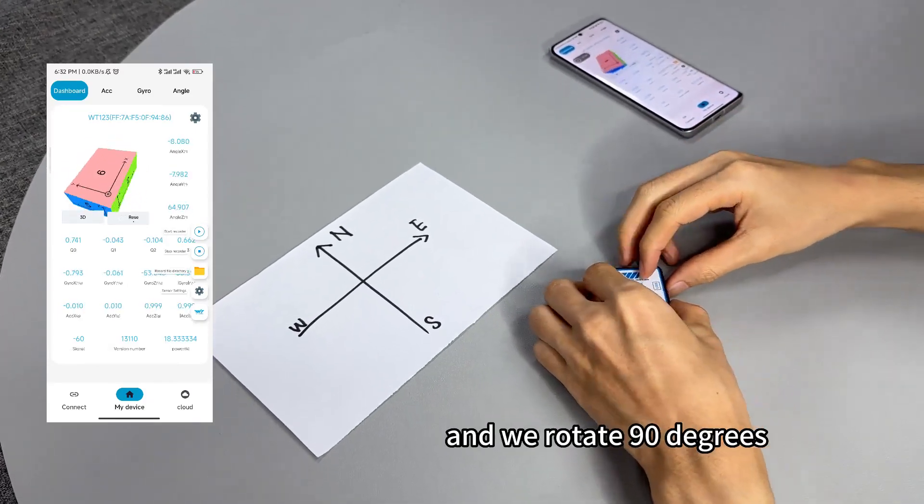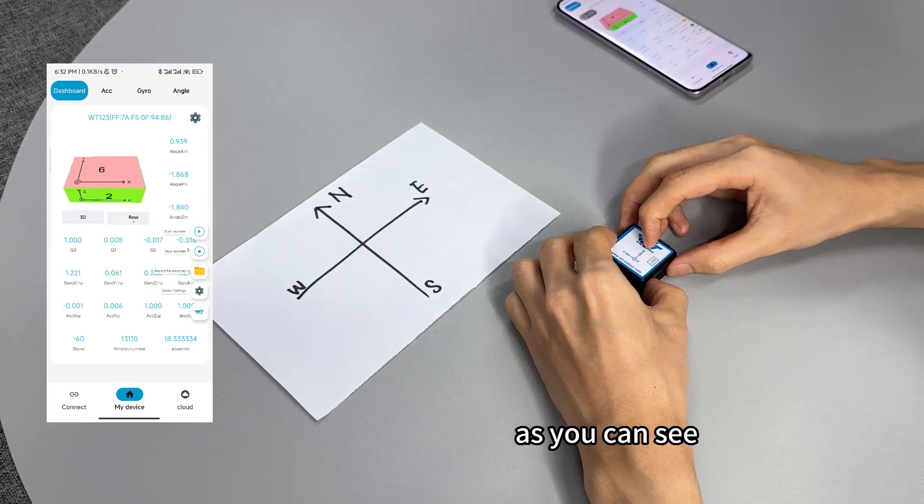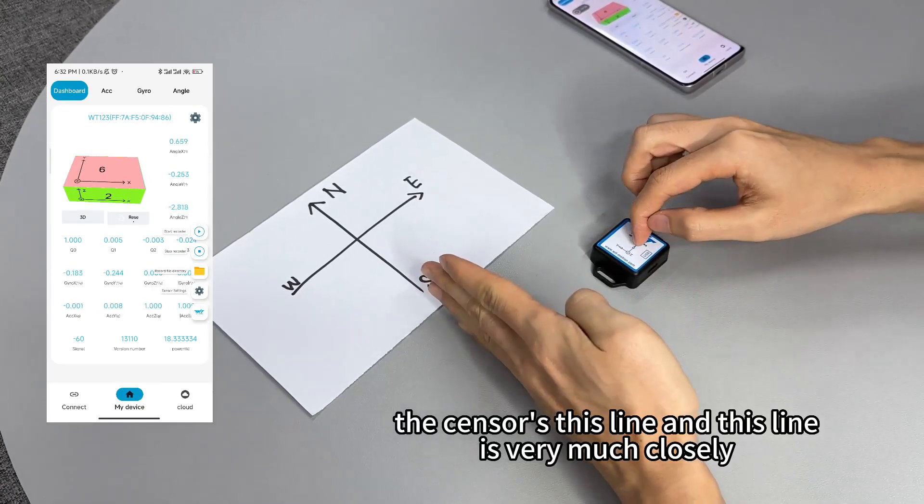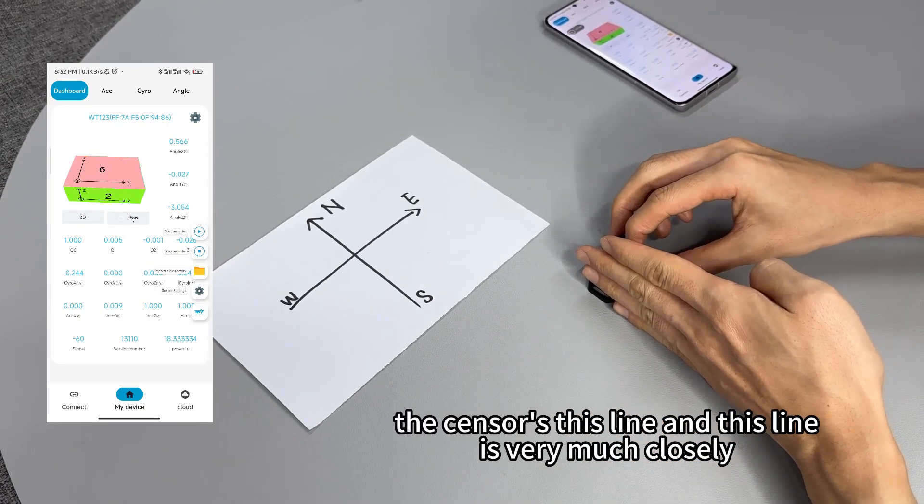And so we rotate the sensor back and we rotate 90 degrees. As you can see, the sensor's this line and this line are very much closely aligned.